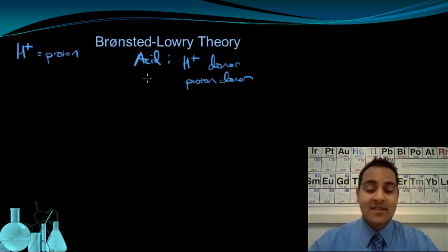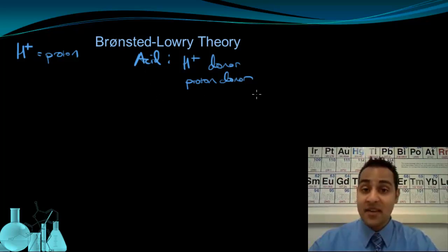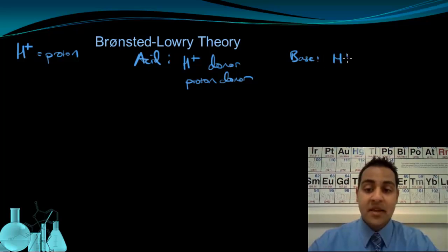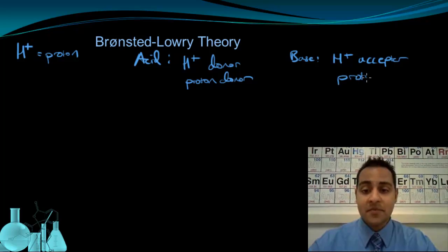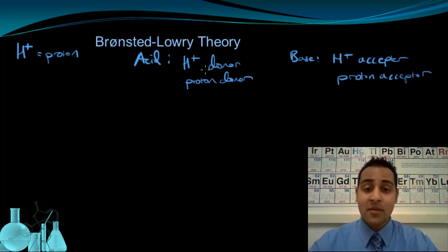A Bronsted-Lowry acid is some substance that donates a proton to something else. And that means that a Bronsted-Lowry base is an H+ acceptor, or a proton acceptor, because if some substance is going to give away a proton, another substance has to accept it.